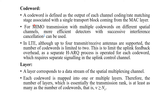Codeword: A codeword is defined as the output of each channel coding or rate matching stage associated with a single transport block coming from the MAC layer. For MIMO transmission with multiple codewords and different spatial channels, more efficient detectors with successive interference cancellation can be used. In LTE technology, although up to four transmit-receive antennas are supported, the number of codewords is limited to only two. This limits the uplink feedback overhead, as a separate HARQ process is operated for each codeword, requiring separate signaling in the uplink control channel.